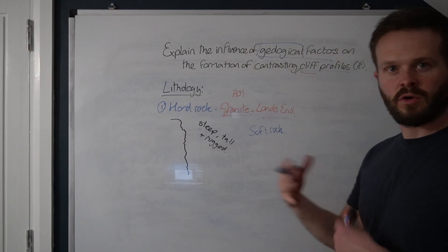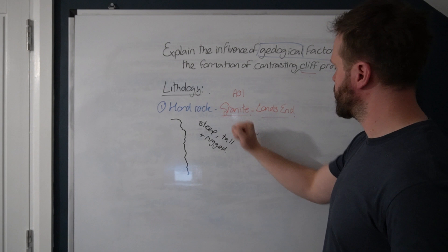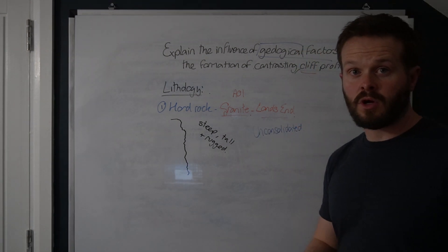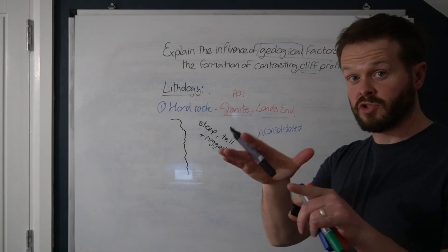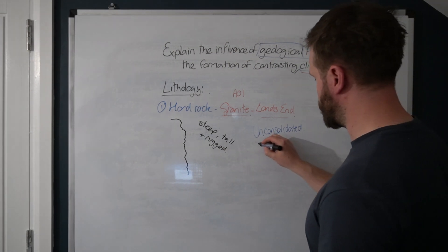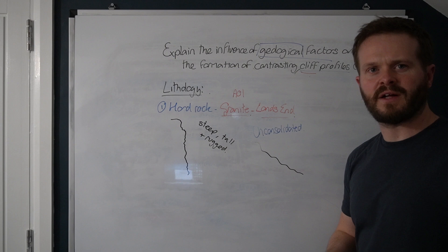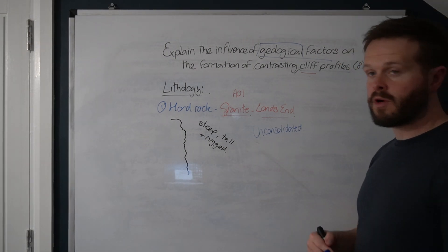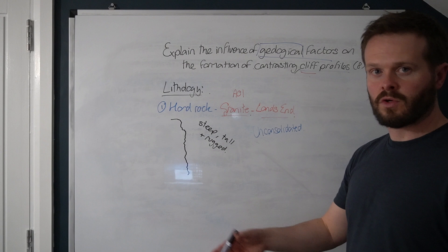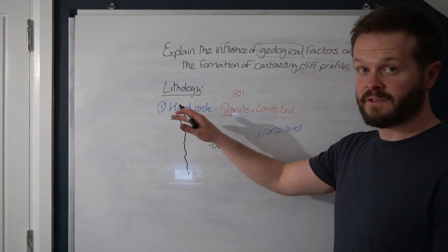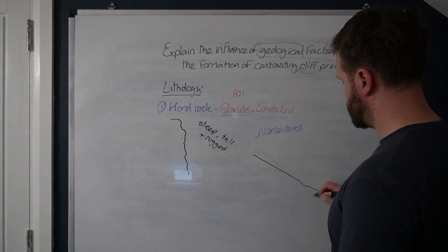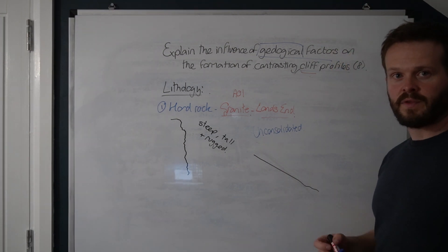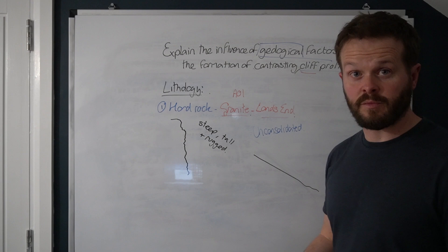Whereas soft rock or let's go with our unconsolidated rock, something like a boulder clay or something like that, you'll see a more gentle sloping beach profile, not beach profile, cliff profile. So with our unconsolidated rock, less steep, less tall, less rugged. It definitely won't be as high. It will look more like that, a gradual sloping cliff profile.